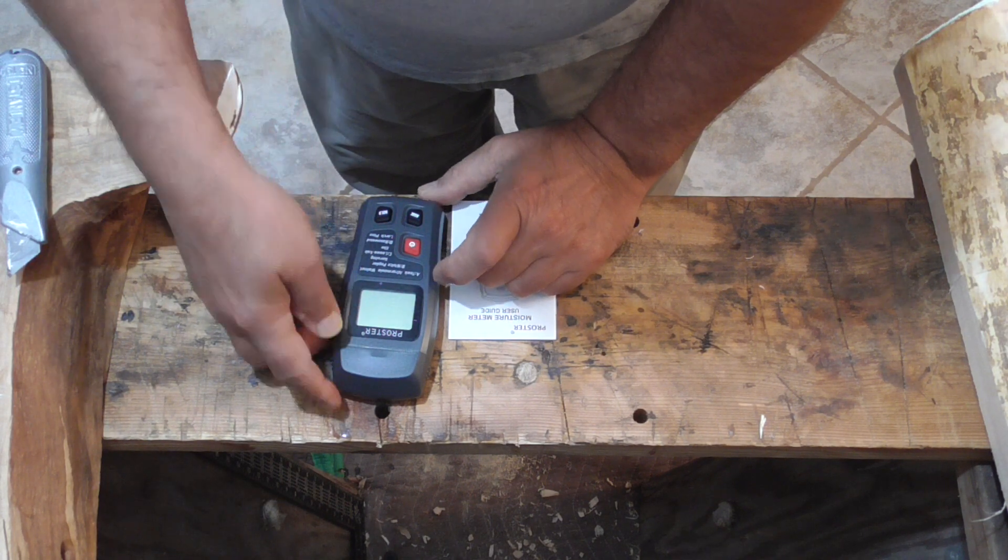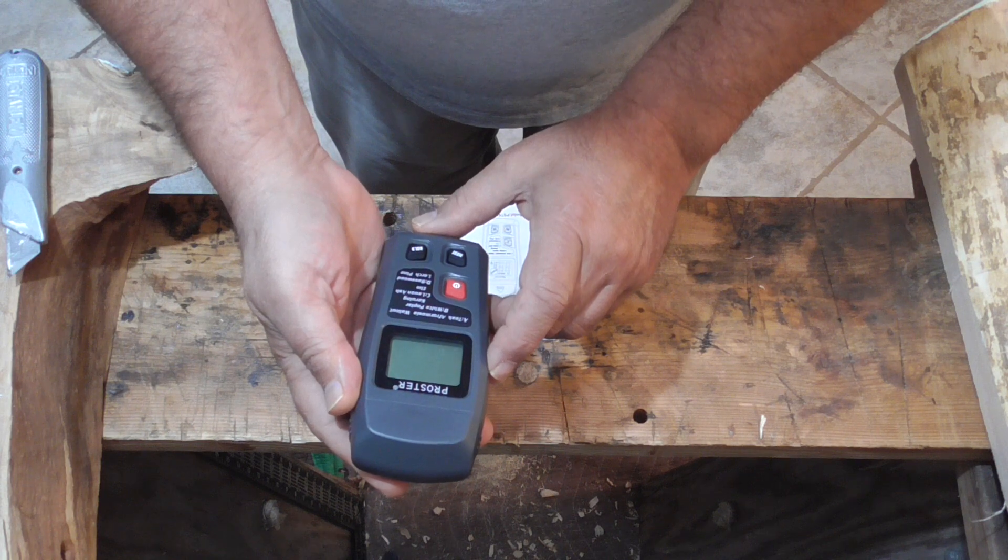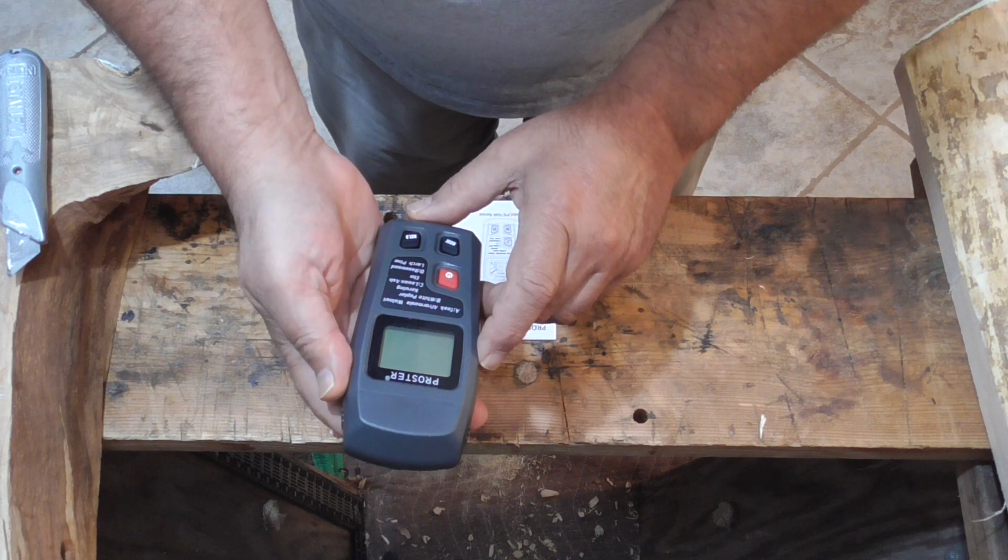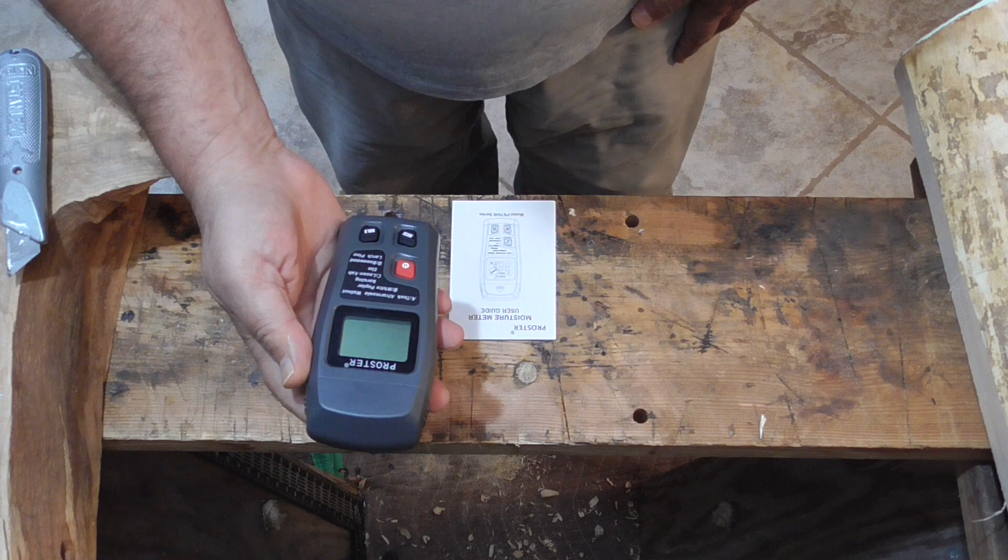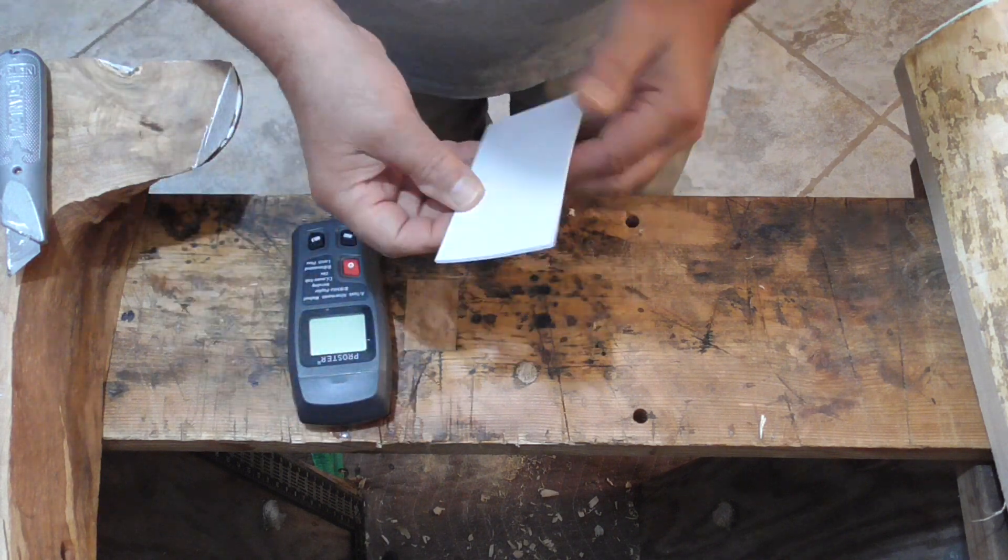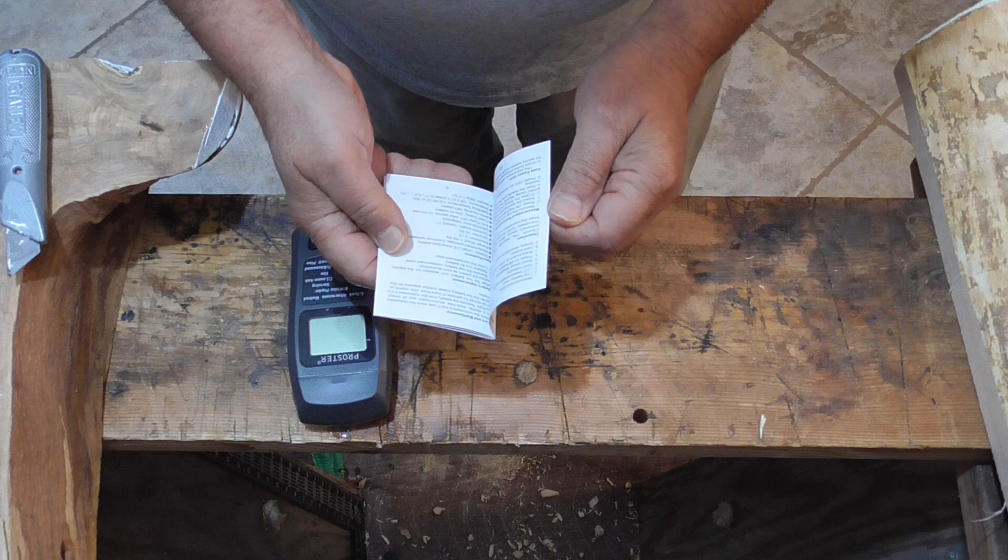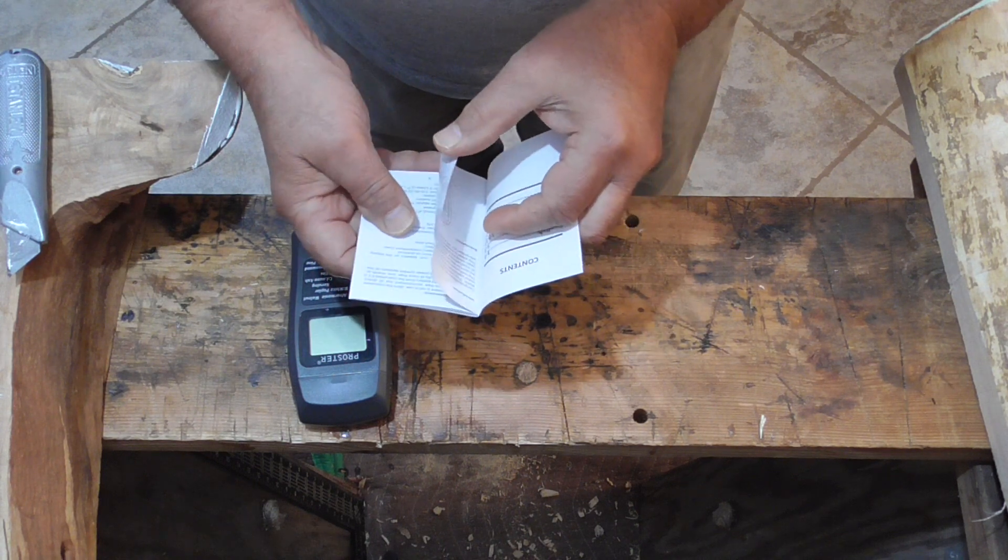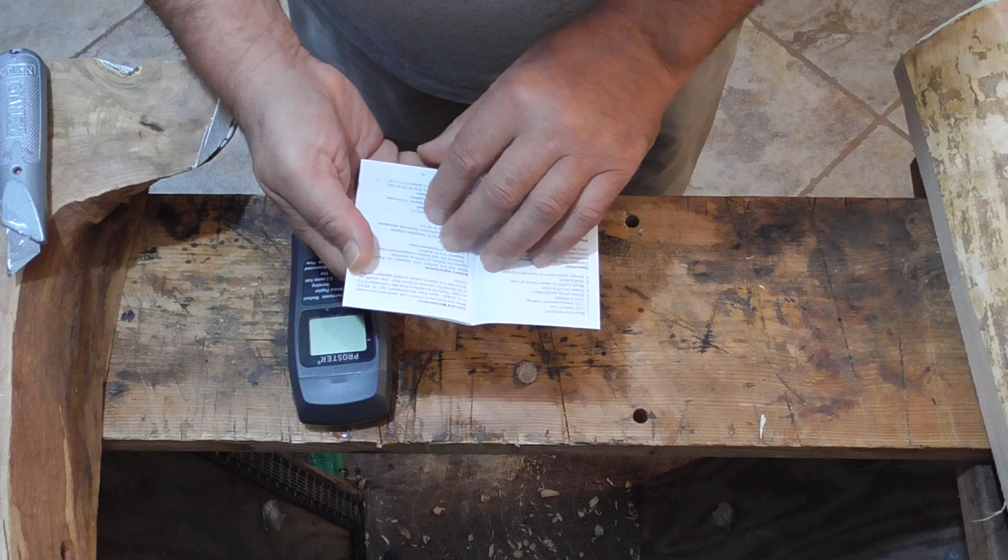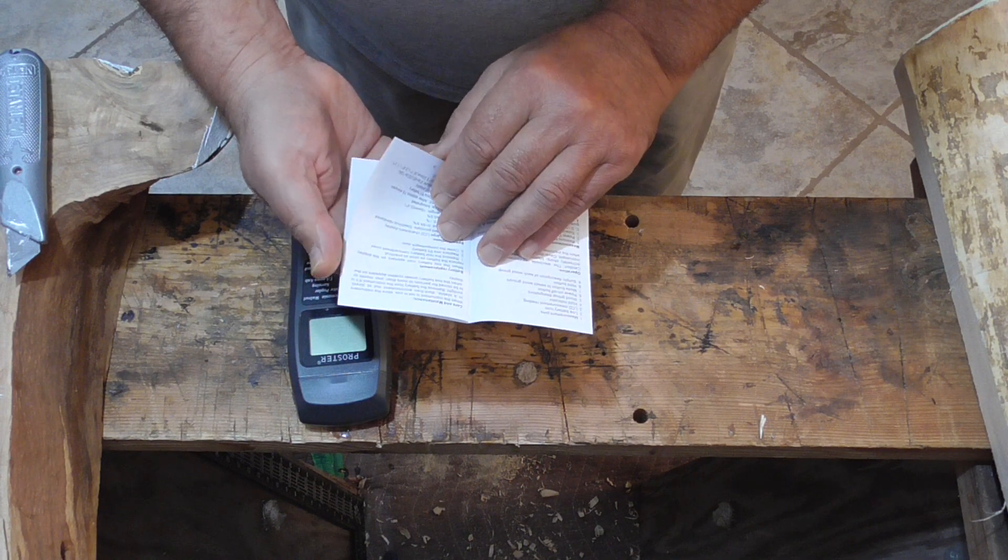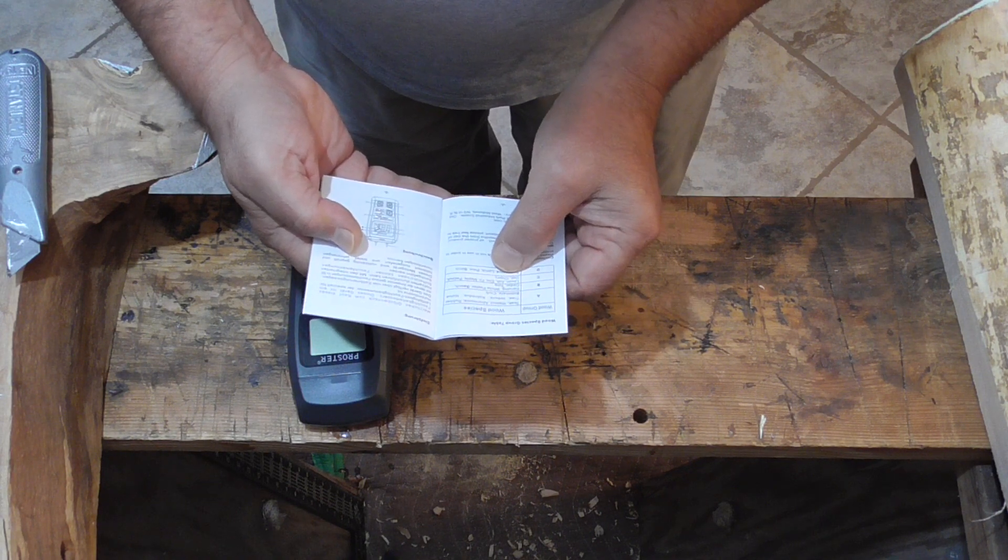So setting A is teak, afromosia, and walnut. B is white poplar. C is luan, ash, and elm. D is basswood, larch, and pine. Let's see if there's a setting for maple. Okay, C is maple.